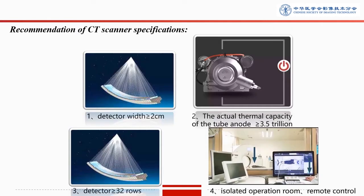Since the main job for the CT scanner in the makeshift hospital is chest scanning, the requirements are not very high. The detector rows should not be less than 2 cm, and the actual thermal capacity of the tube anode should not be less than 3.5 MHU. We prefer a 32-row CT scanner or above. Most importantly, the CT scanner should have an isolated operation room to keep the technologist in a safe area, and it would be ideal to have a remote control system, which is also helpful for infection control and prevention.